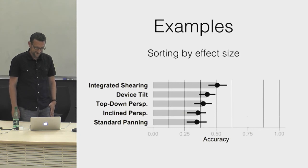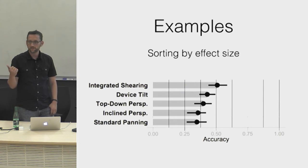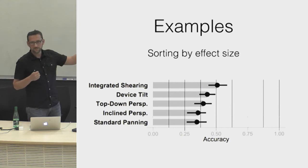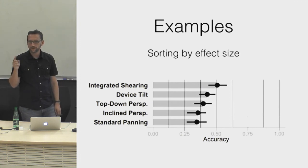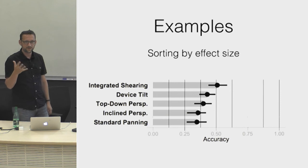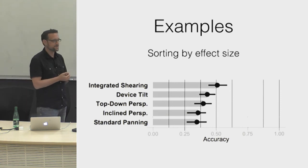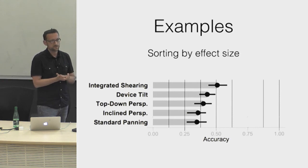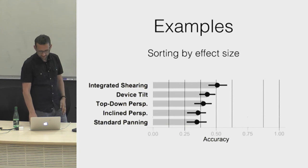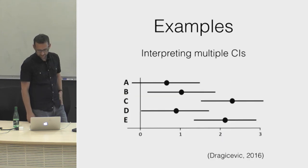Here is another example: in a publication I sorted interaction techniques by descending accuracy. But consider that each of those confidence intervals dances separately across replications, so the ordering will change all the time — a very jerky dance. A more robust approach is to decide in advance the order in which you will report your results, making the plot more robust and less misleading.